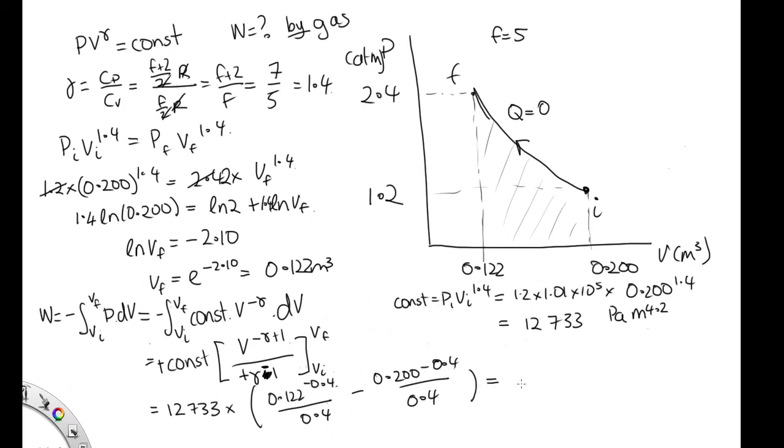Solving that on the calculator, we end up with 13,249. So that's equal to 13.2 kilojoules. That's the work done on gas, which means that the work done by the gas is minus 13.2 kilojoules done by gas.